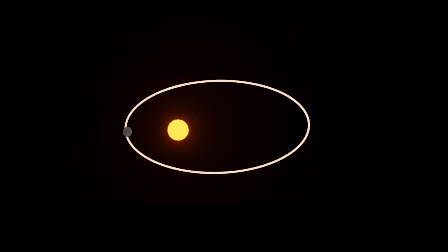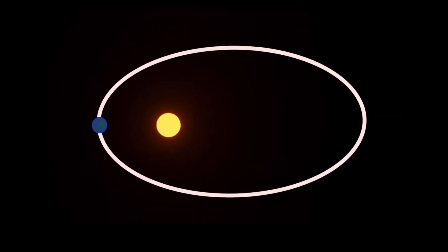The closest planet to the Sun, called Mercury, has an orbital period of 88 days. Our planet Earth, whose orbit has a greater minor axis than Mercury's, also has a greater orbital period of 365 days, or one year.